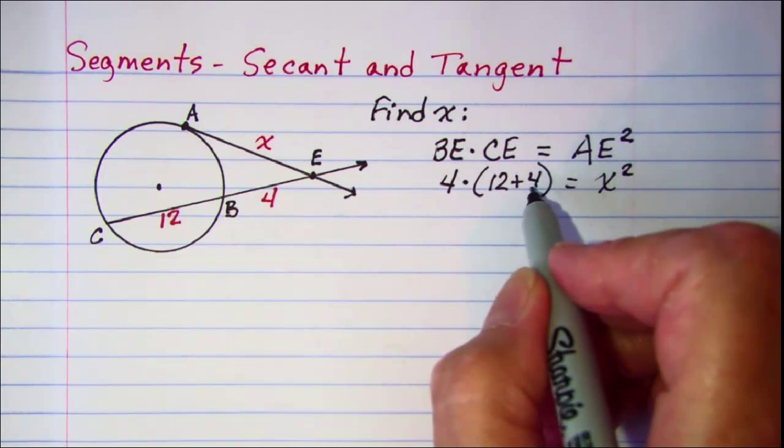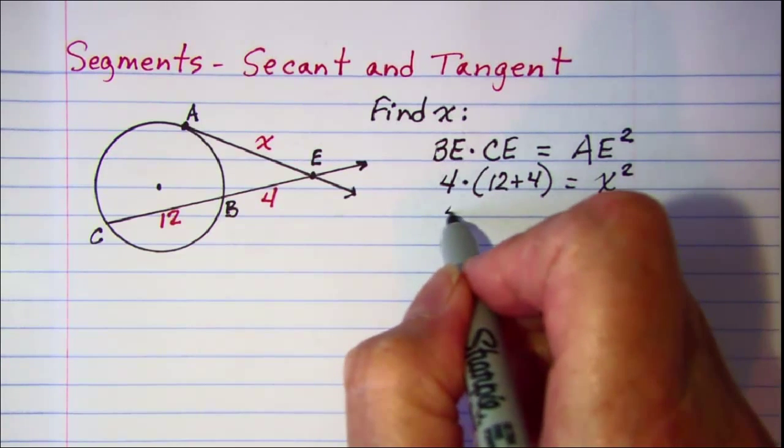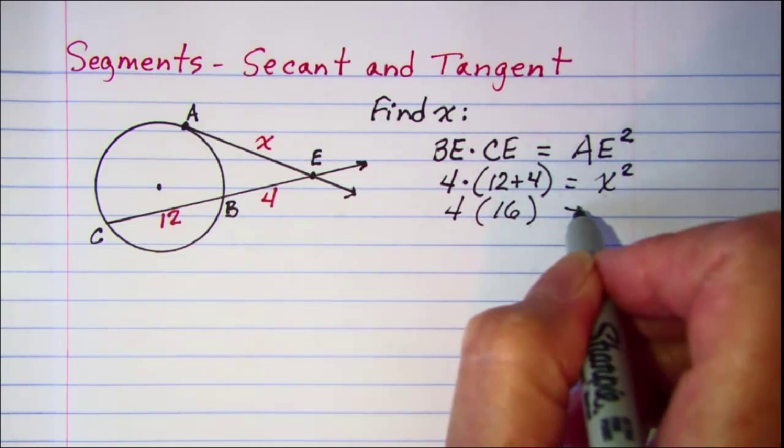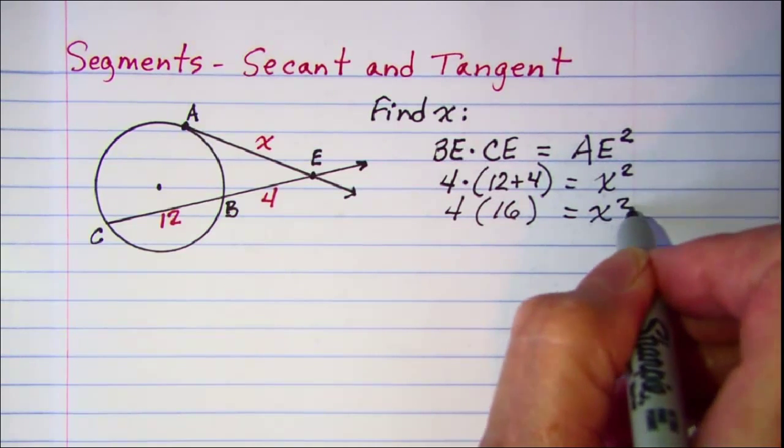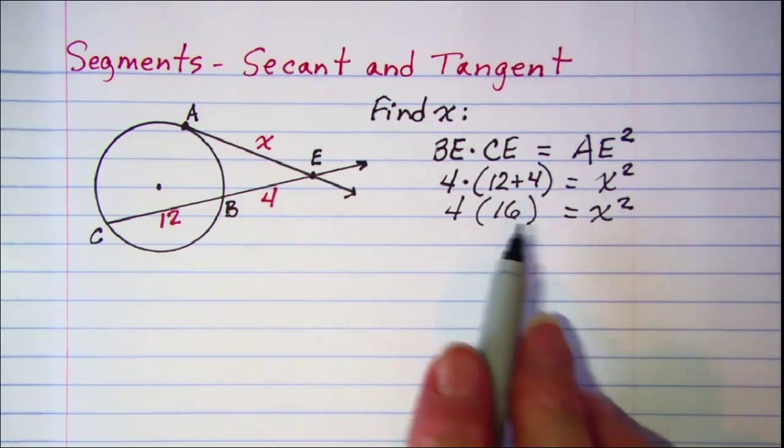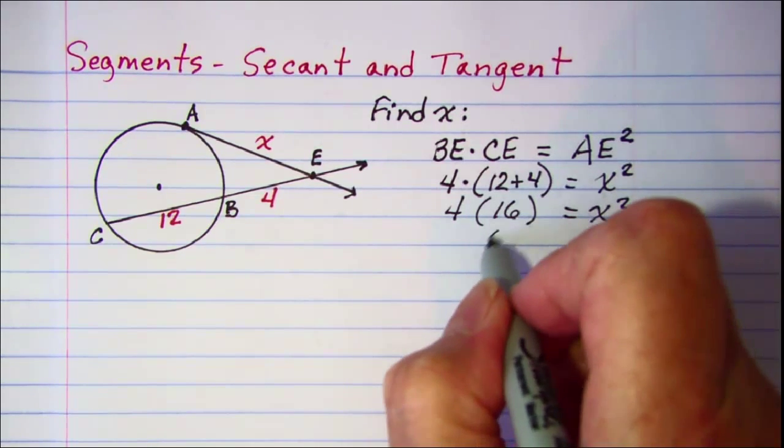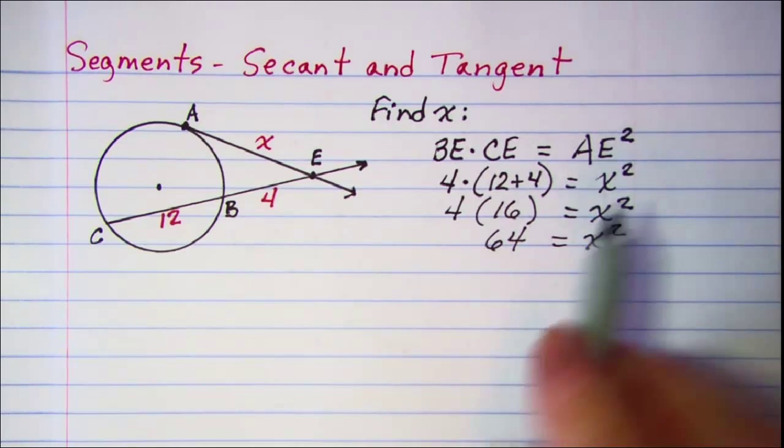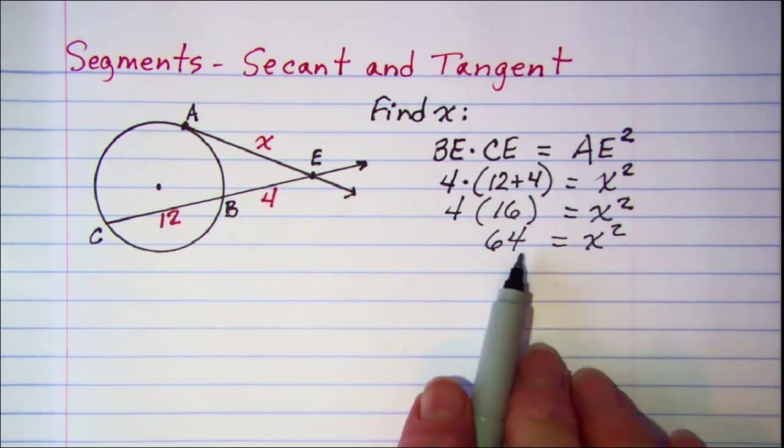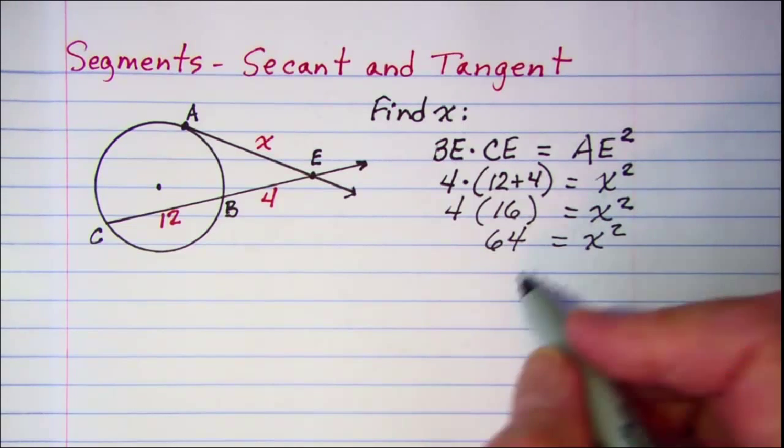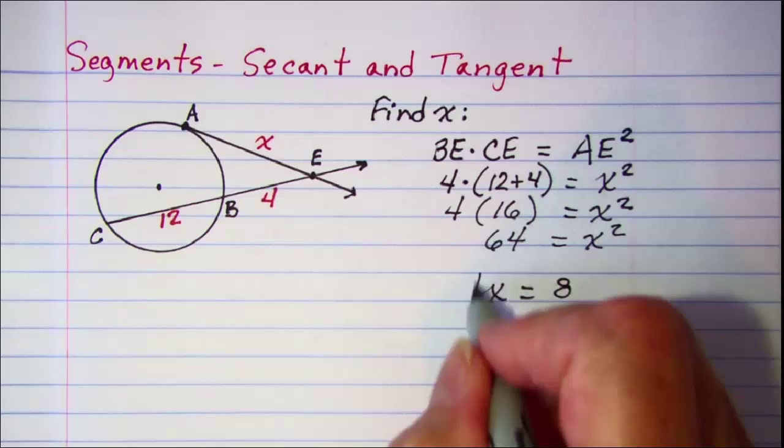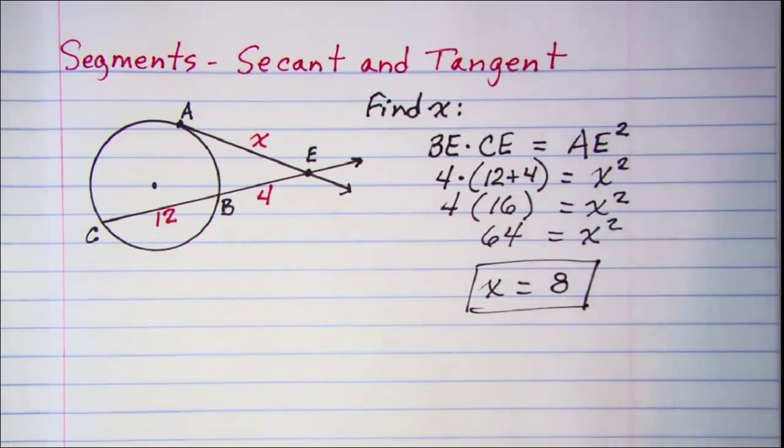12 plus 4 is 16, so we have 4 times 16 equals x squared. We know that 4 times 16 is 64, and then to find x we just square root both sides, so x is equal to 8.